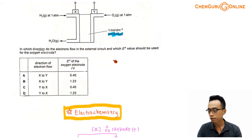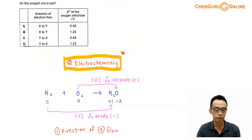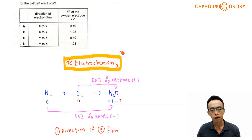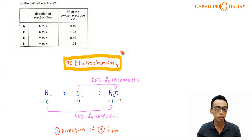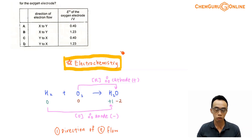The topic tested here is clearly electrochemistry, so let us run through some concepts involving hydrogen-oxygen fuel cell, which is explicitly mentioned in the syllabus. We know that it is essentially the reaction between hydrogen and oxygen to give water. From this, we can determine which electrode is the anode, which undergoes oxidation, and which electrode is the cathode that undergoes reduction.